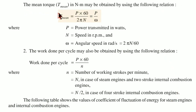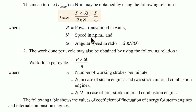The mean torque T_mean in Newton meters may be obtained by the relation: T_mean equals P multiplied by 60 divided by 2πn, which equals P divided by ω, because ω equals 2πn divided by 60, where P is power transmitted in watts, n is speed in rpm, and ω is angular speed in radians per second.